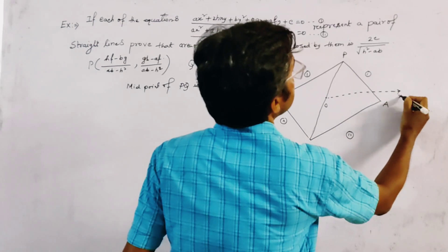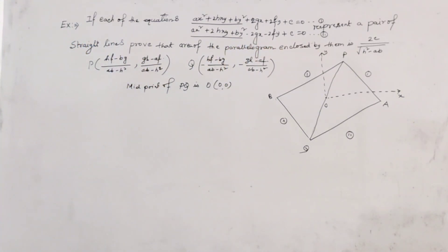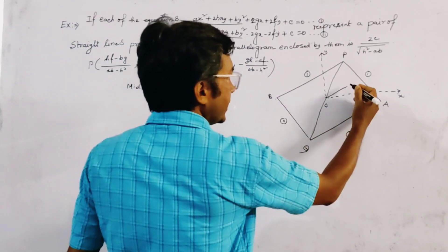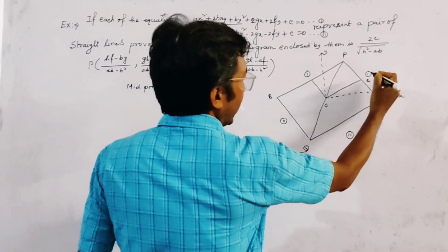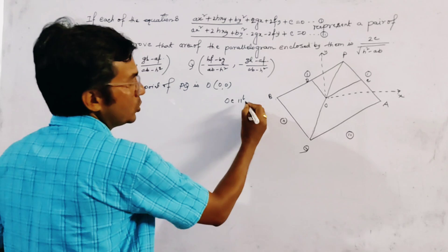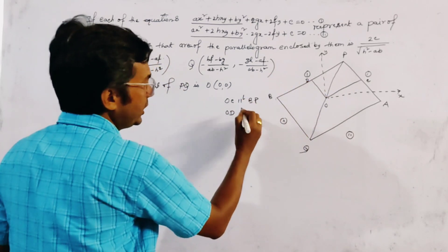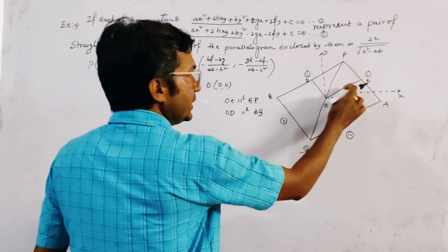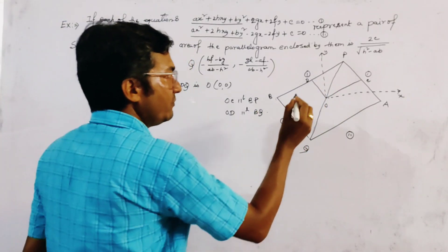We draw the x-axis OX and y-axis OY. We then draw two lines: OC parallel to PB, and OD parallel to BQ. So OC is parallel to PB and OD is parallel to BQ.